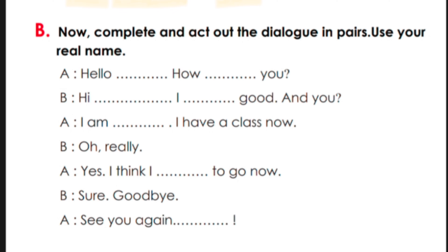Now complete and act out the dialogue in pairs — use your real name. You use your name and your partner uses their real name. For example, if you are Rohit, then Rohit speaks first. Your friend Nadira says: Hello!